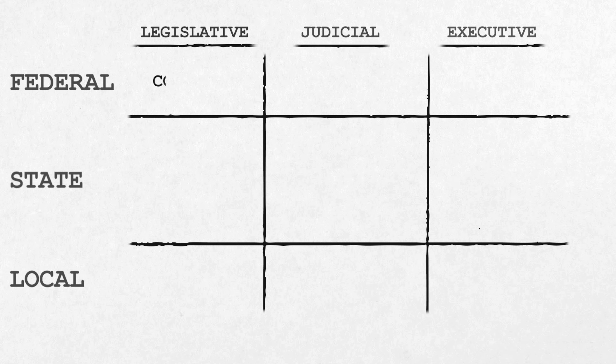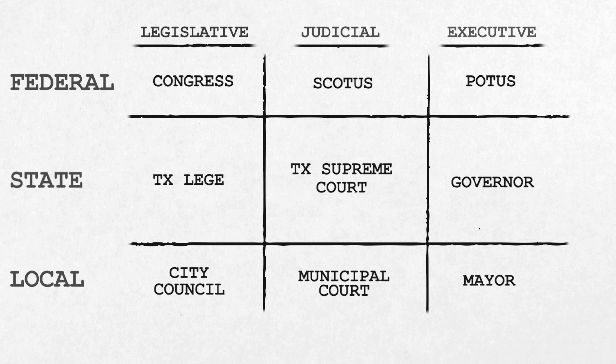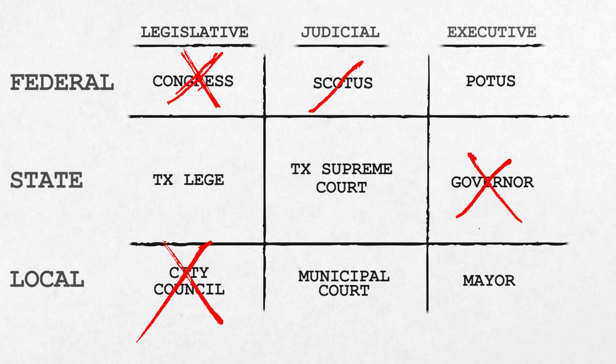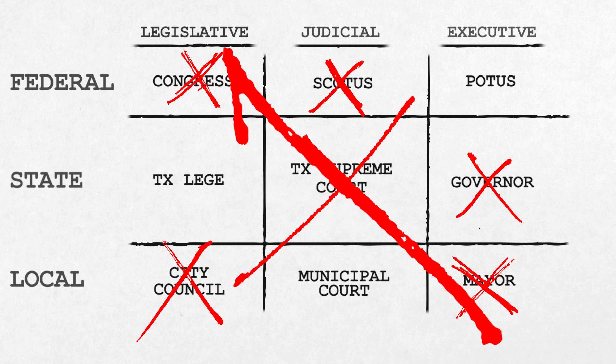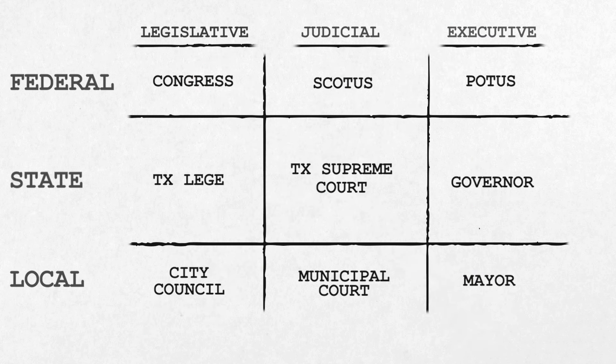Now, all these levels and branches might seem unnecessarily cumbersome, but our government is divided up this way on purpose. It's to prevent any one person or office from accumulating too much power. The three branches are each operative at all three levels.